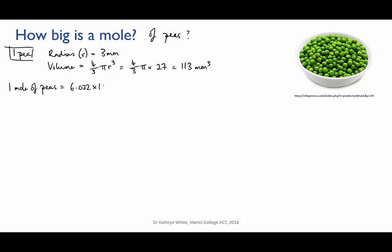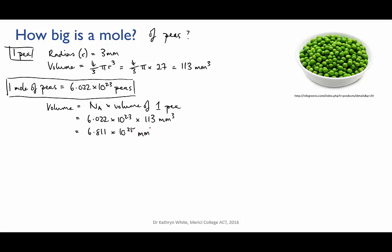All right, so that's the volume of one pea. If I have a mole of peas, that's 6.022 times 10 to the 23 peas. So the combined volume of those peas will be 6.022 times 10 to the 23 times 113 millimeters cubed for each pea, and that gives me 6.811 times 10 to the 25 cubic millimeters. Now I don't have a good feel for how big that is because cubic millimeters are pretty small and that's a really large number, and I can't see in my head how much room that takes up.